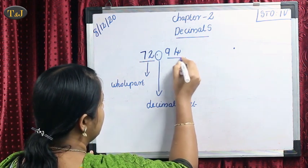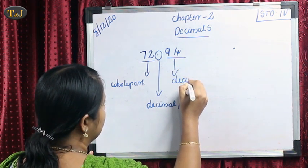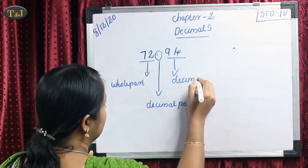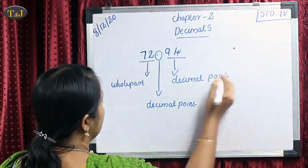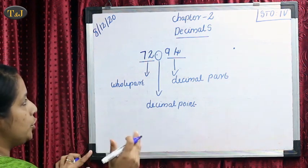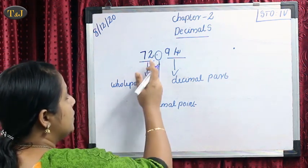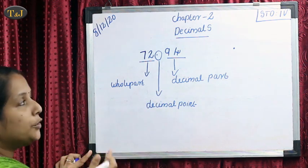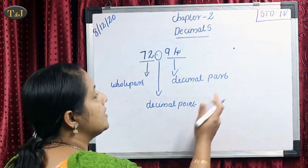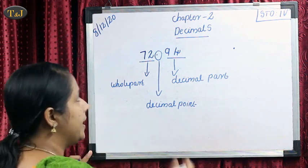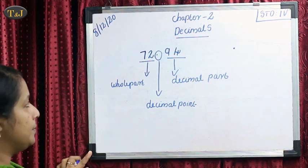This is our decimal point. And this part after the point is known as the decimal part. So our number is 72.94. Before the point it is known as the whole part, and after the point it is known as the decimal part. This dot is known as the decimal point.